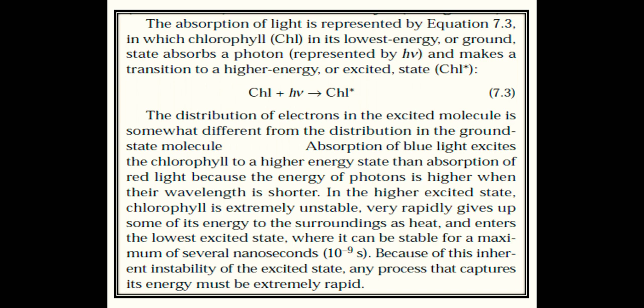This means that whenever the electron is in the higher excited state, chlorophyll is unstable, and its energy is disposed of. So it will return to ground level. Because of this inherent instability of the excited state, any process that captures its energy must be extremely rapid.